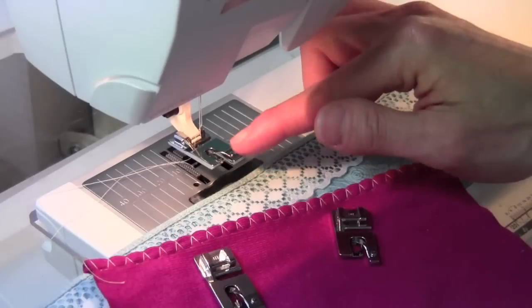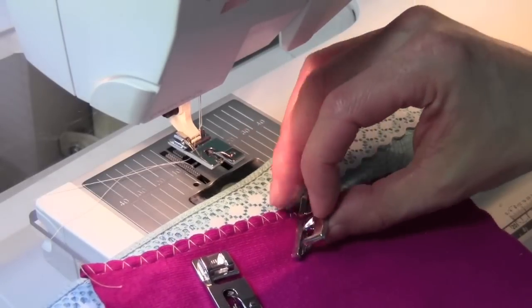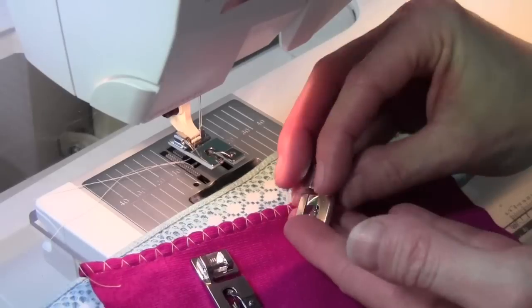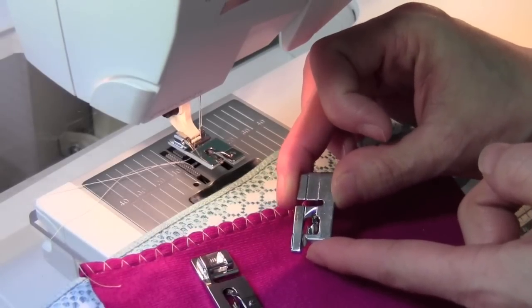There's a 2mm, a 3mm, and a 5mm hemmer foot. If you turn it over, you'll notice there is a groove or channel on the backside indicating the finished size of the hem.